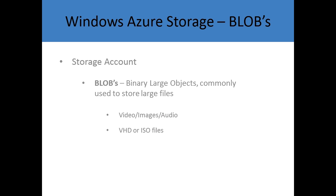VHD or ISO files — if you have a library of these types of files for creating virtual machines, very commonly you'll find VHDs and ISOs placed into blob storage, making them very accessible to geographically dispersed locations. Backups are commonly sent into blob storage as well so that we can retrieve them from multiple locations if necessary. And really any kind of binary or text data — there are no real restrictions as to what kind of file you might want to put into a blob.